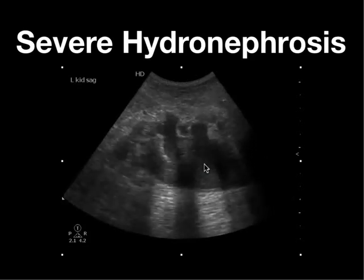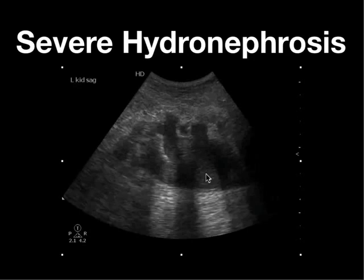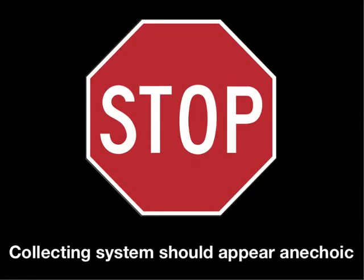There's something else that should stand out here: in uncomplicated hydronephrosis, the fluid within the collecting system should be anechoic. If the fluid appears echogenic, this is more consistent with pyonephrosis — or it could be blood. This patient had an obstruction for about eight to ten days and was febrile to 103 degrees. They were ultimately stented and found to have pyonephrosis. Key point: the collecting system should appear anechoic; if it's echogenic, that's either blood or purulent debris.